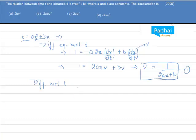This will be equal to -1/(2ax + b)² × differentiation of inside, which will be 2a × v. Now let us see the options. Here it is given in terms of velocity.